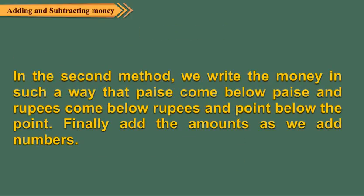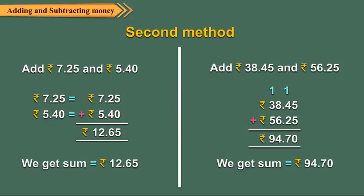In the second method, we write the money in such a way that paise comes below paise and rupees come below rupees and point below the point. Finally, we add the amounts as we add numbers. Let us take a look at the example shown.